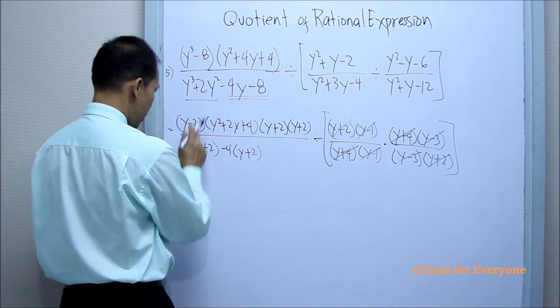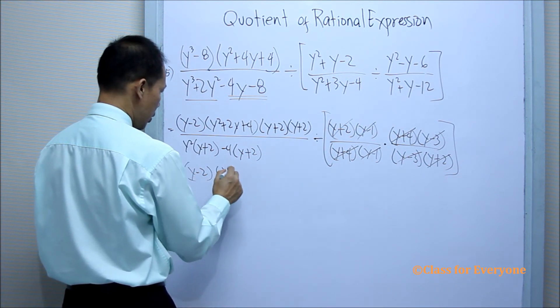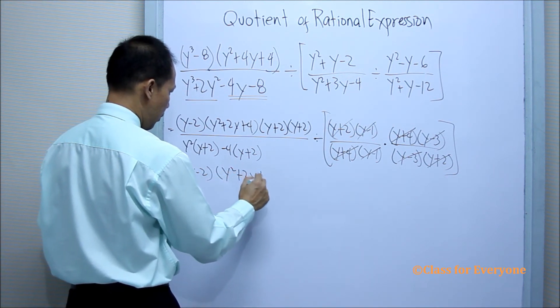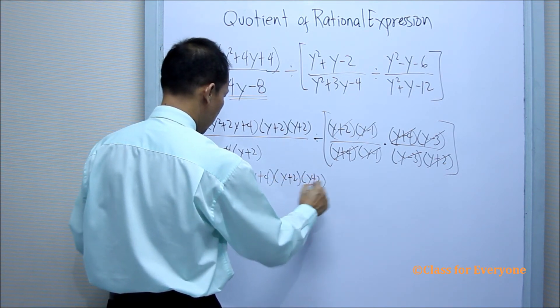So the numerator is y minus 2, y squared plus 2y plus 4, y plus 2, and y plus 2.